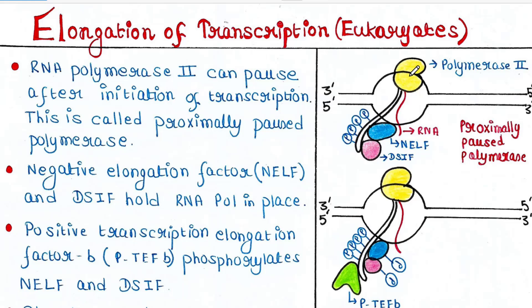RNA polymerase 2 can pause after initiation of transcription. This is called proximally paused polymerase. Negative elongation factor, or NELF, and DSIF hold RNA polymerase in place — these are two important proteins.